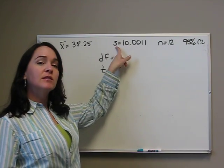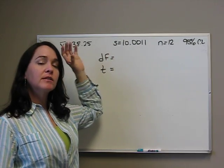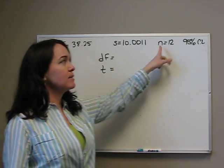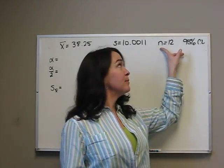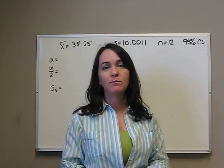Since we're talking about x̄, the sample, we use s. It's a sample of 12 and we're doing a 95% confidence interval.